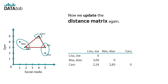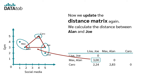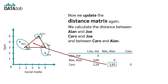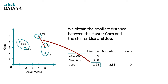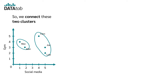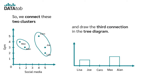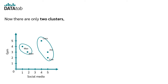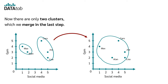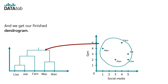Now we update the distance matrix again. We calculate the distance between Alan and Joe, Carol and Joe, and between Carol and Alan. We obtain the smallest distance between the cluster Carol and the cluster Lisa and Joe, so we connect these two clusters and draw the third connection in the tree diagram. Now there are only two clusters, which we merge in the last step, and we get our finished dendrogram.